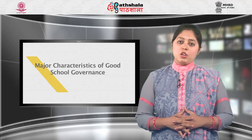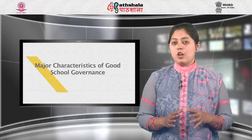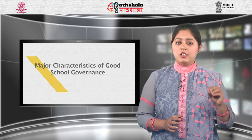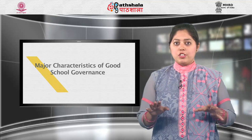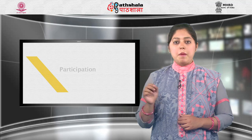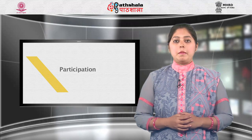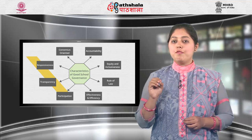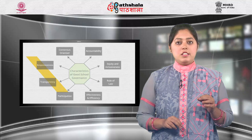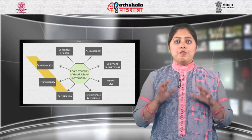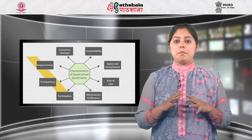Thus, simply we can say that school governance is the total management of school, like the government manages the whole country. Now we will talk about the major characteristics of good school governance — how we can say that the governance of a particular school is good or not. In this flow chart you can see different characteristics. First is participation: the participation by parents, teachers, community members and pupils is a key of good school governance. Second is rule of law: good school governance requires fair legal frameworks that are enforced impartially.